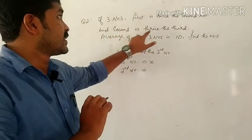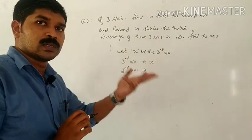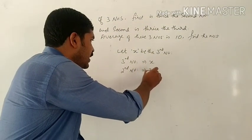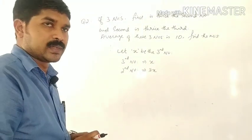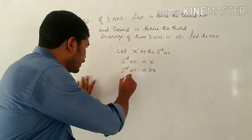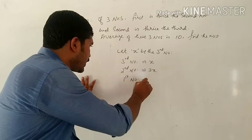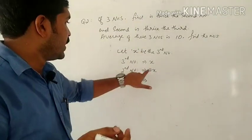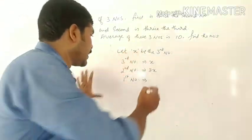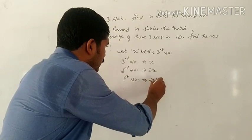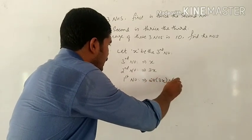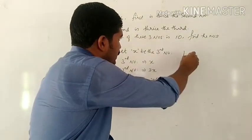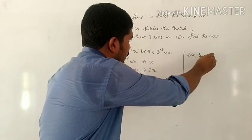The second is thrice the third, so second number equals 3 times x, which is 3x. The first is twice the second, so first number equals 2 times 3x, which equals 6x. So the three numbers are 6x, 3x, and x.